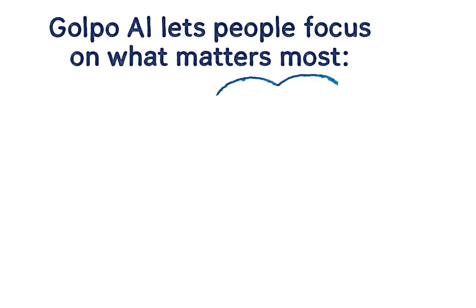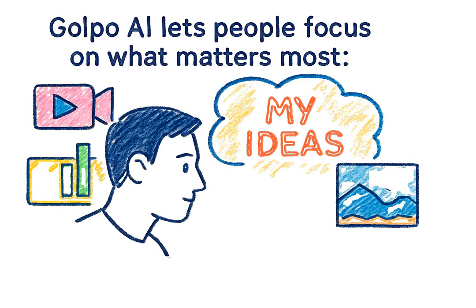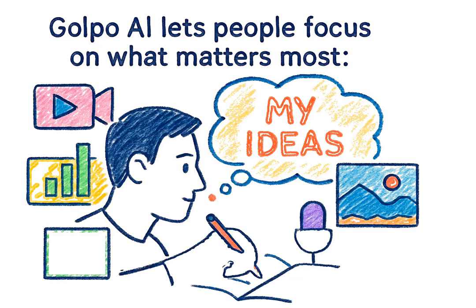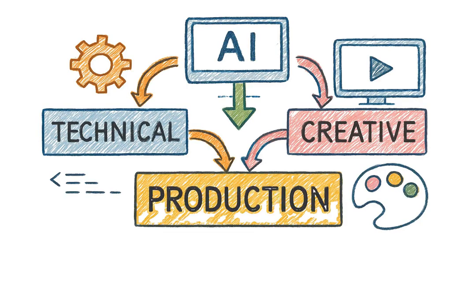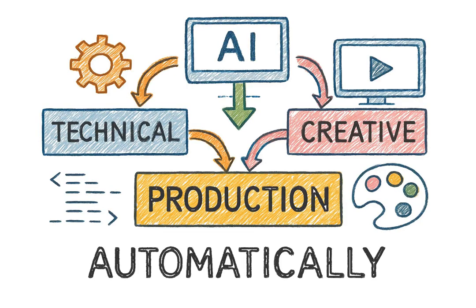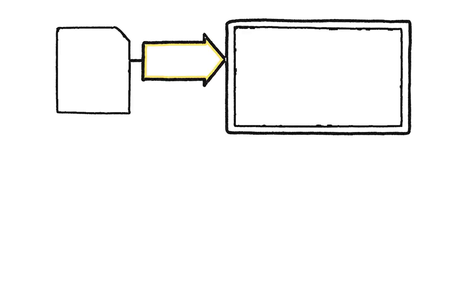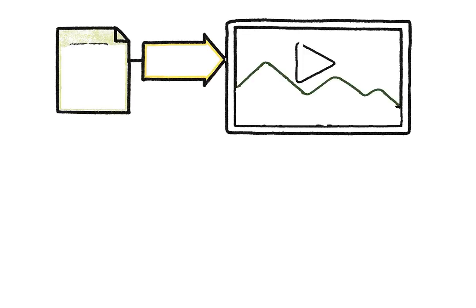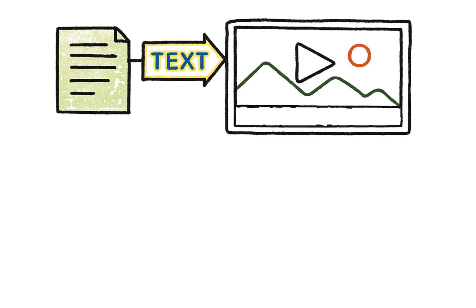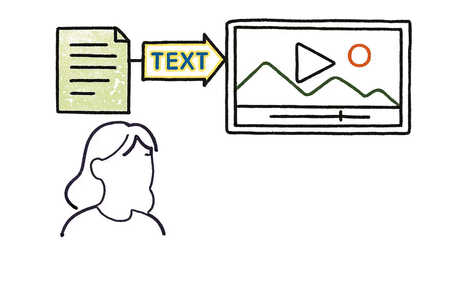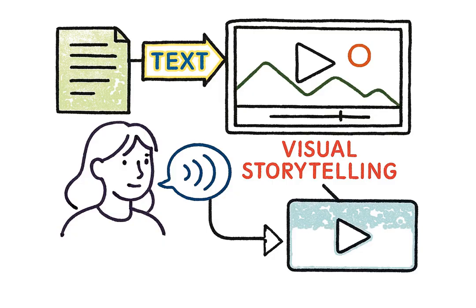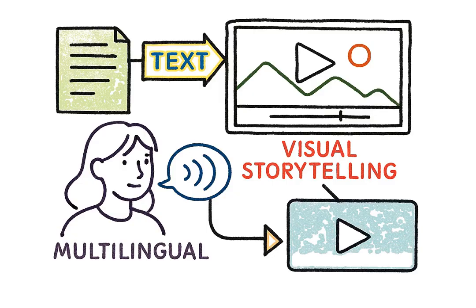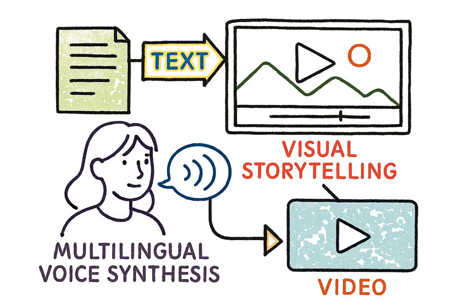Golpo AI lets people focus on what matters most — their ideas. It handles the technical and creative parts of production automatically. By combining text understanding, visual storytelling, and multilingual voice synthesis, it makes video creation faster, more accessible, and more accurate than ever before.